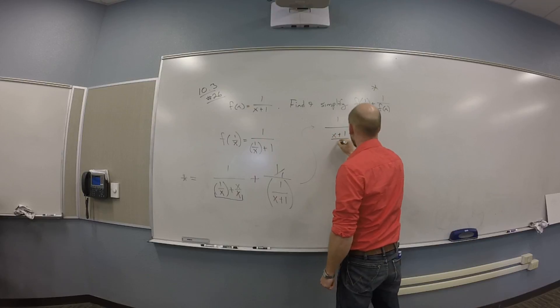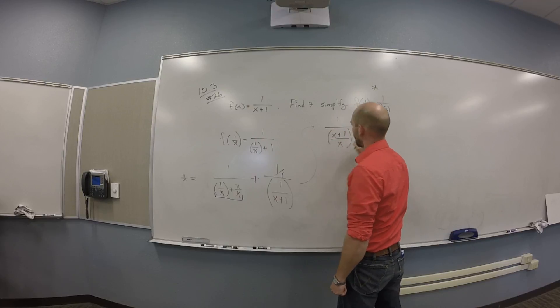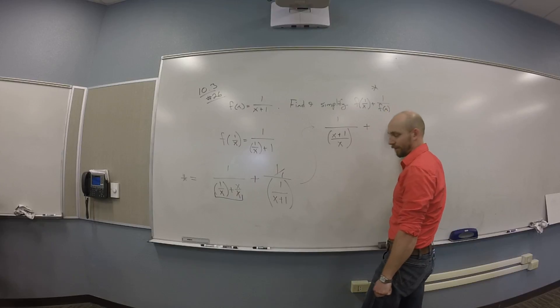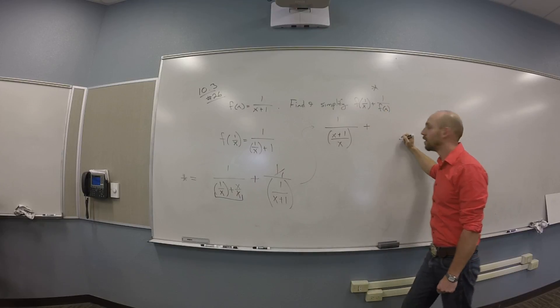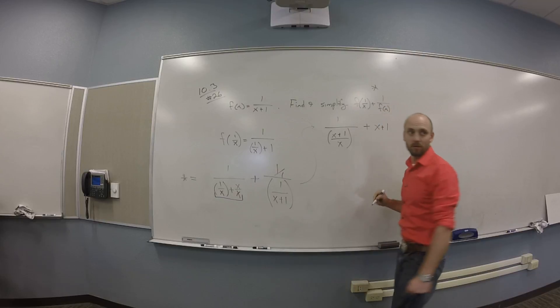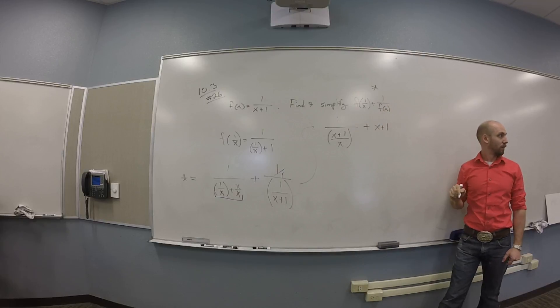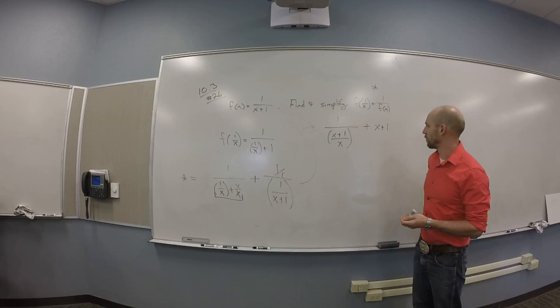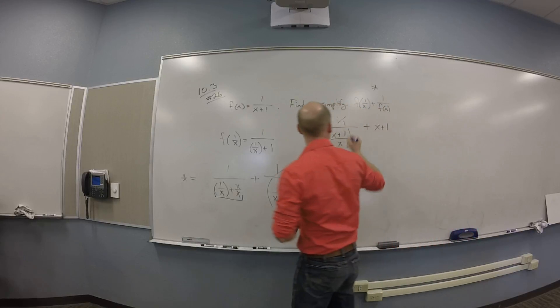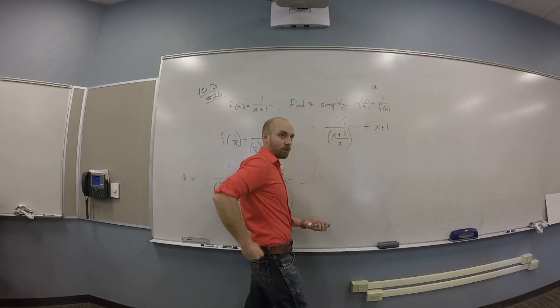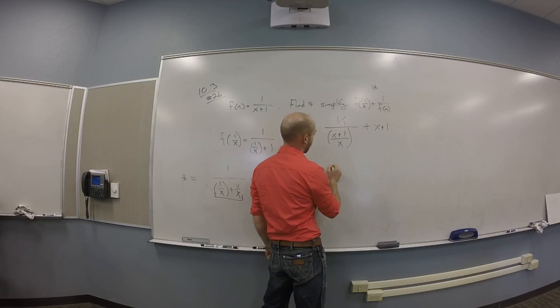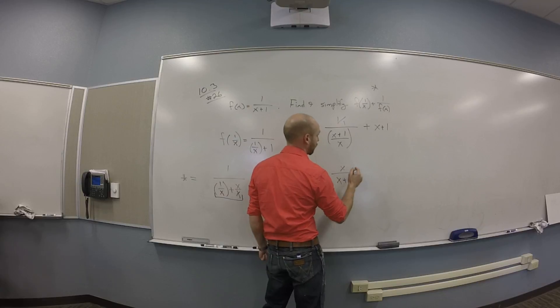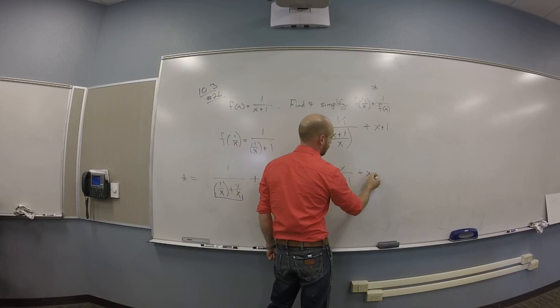X plus 1 over X. And then I'm adding this to what? X plus 1. You guys all see that? Okay. Then what do you need to do with this left-hand bit? Same thing you did with the right. So think about that as 1 over 1, right? Reciprocate and multiply.